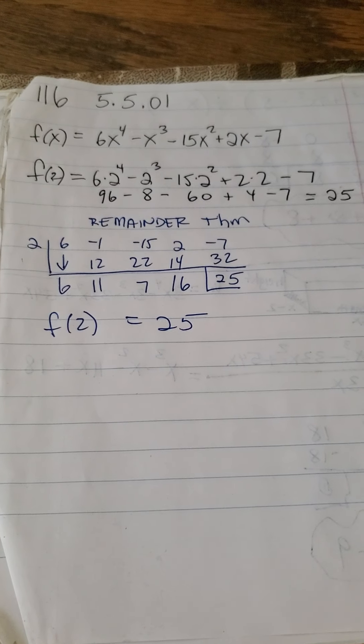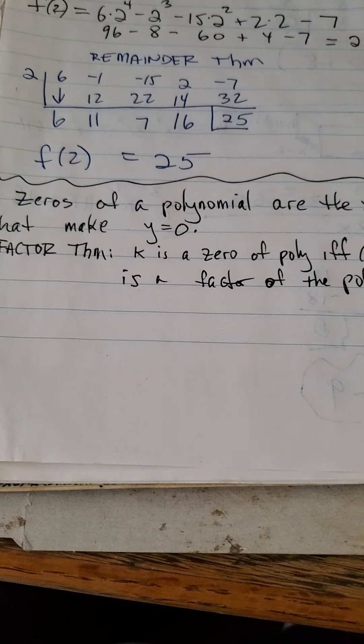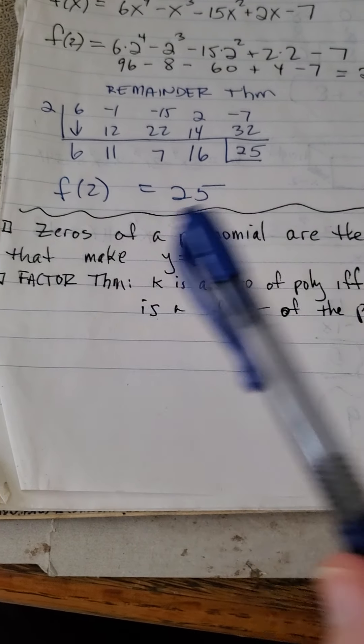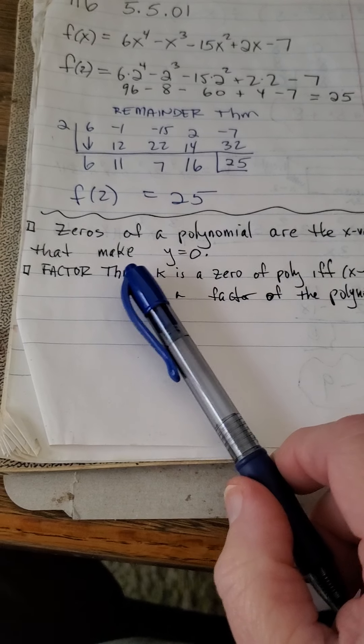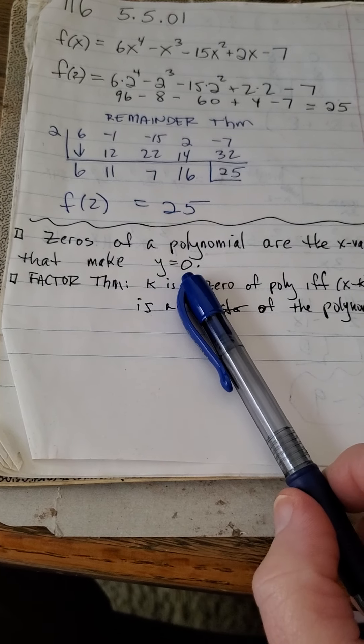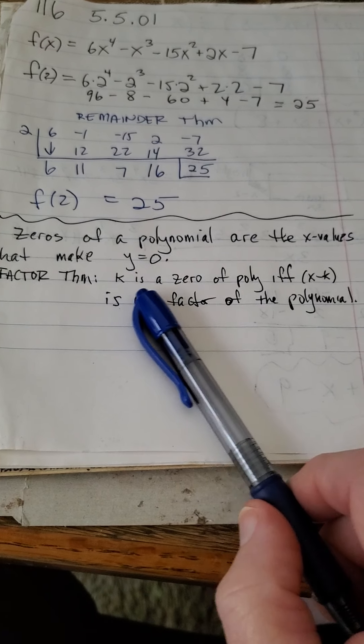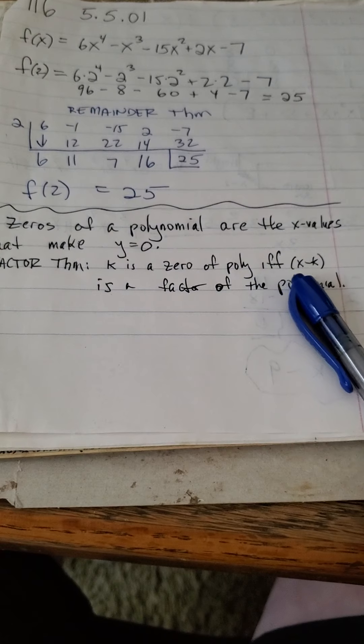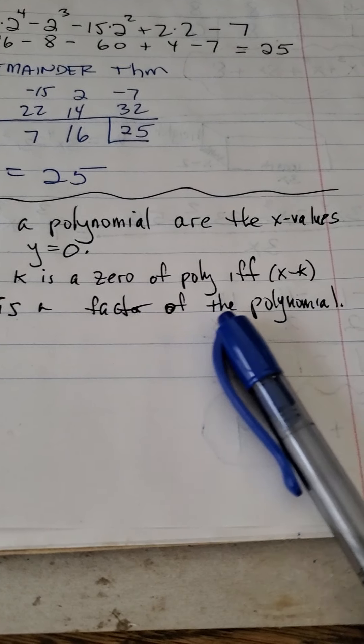It gives us a quick way to find the value of a polynomial at a given x value, or I should say the output for a given input. Now, here's an important related concept. The zeros of a polynomial are the x values that make the y value equal to 0. And the factor theorem tells us that k is a factor of a polynomial if and only if x minus k is a factor of the polynomial.